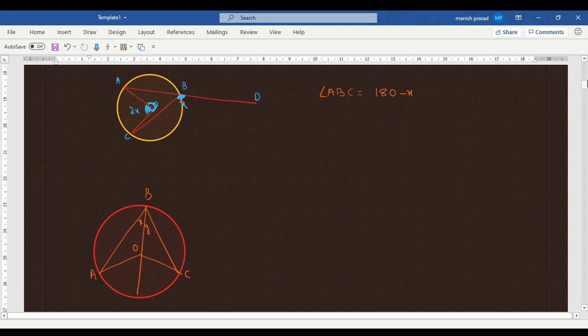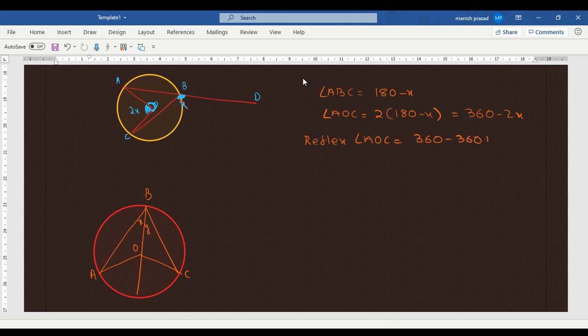So angle AOC is twice of it. Angle AOC is twice of it, that means it would become 360 minus 2x. And reflex angle AOC is 360 minus 2x. So we get the answer: 360 minus 360 minus into minus is plus, 2x cancels, and the answer is there.